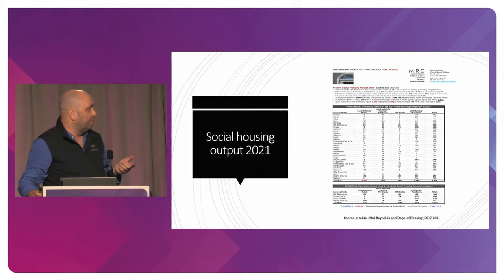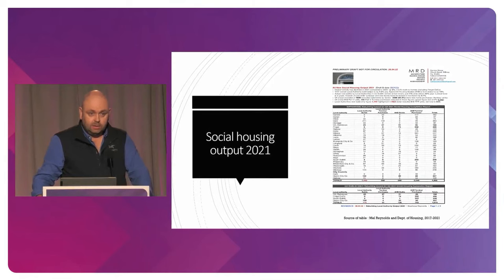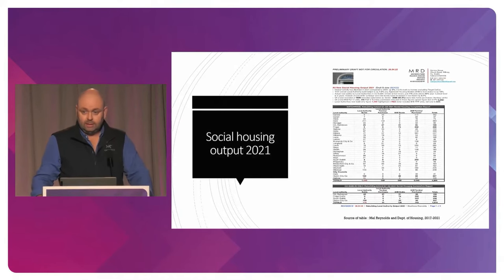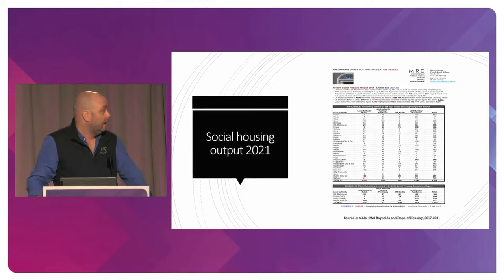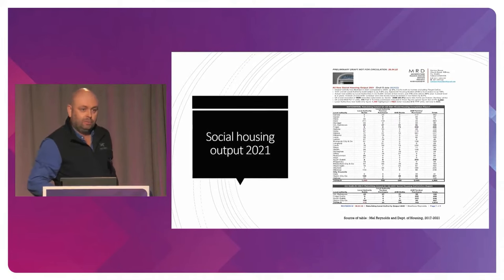The first one I want to look at is social housing output. This is Mel Reynolds — Mel is an architect and policy guru. The Department of Housing released a 200-page PDF with loads of lines on it, and Mel has to go through it with a ruler and a pencil basically to make this work. They refused to release the Excel spreadsheet, which is a disgrace despite the Karen Corley telling him to do it several times. Mel has never really been wrong — I think he was out by one house one year out of thousands.